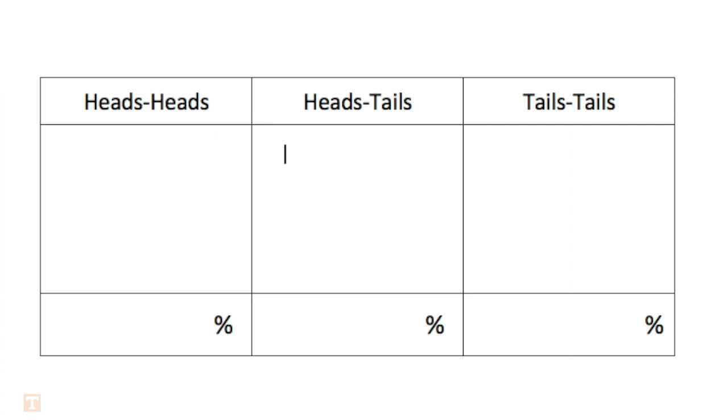I flipped heads and let's say that my partner flipped tails. For this toss, a tally mark would go in the heads-tails column. When you have finished tossing the coins and recording the results a total of 50 times, find the total number of tallies for each column. The three totals should have a sum of 50.